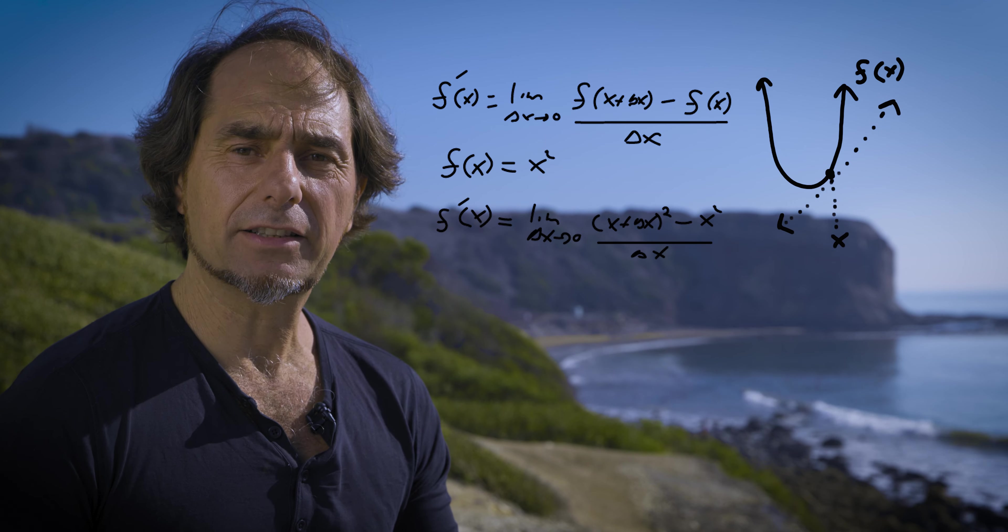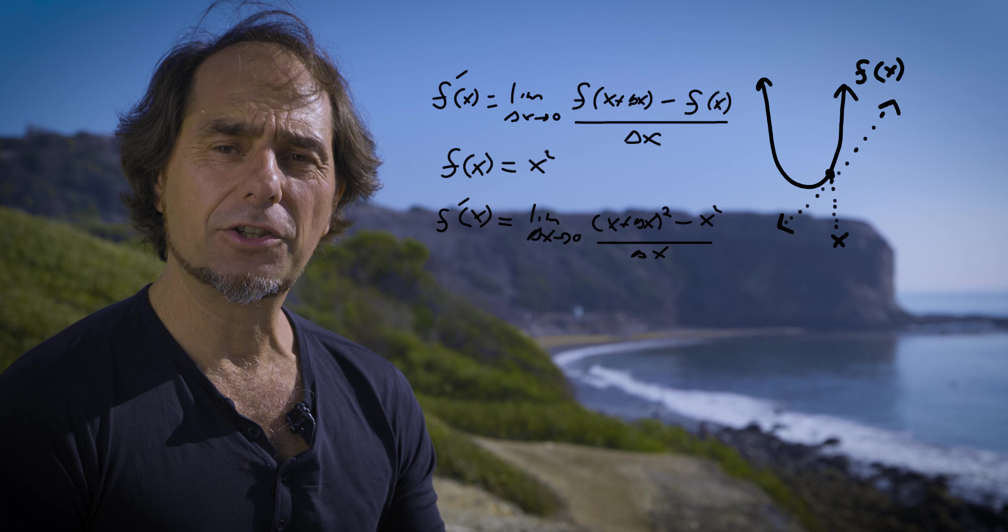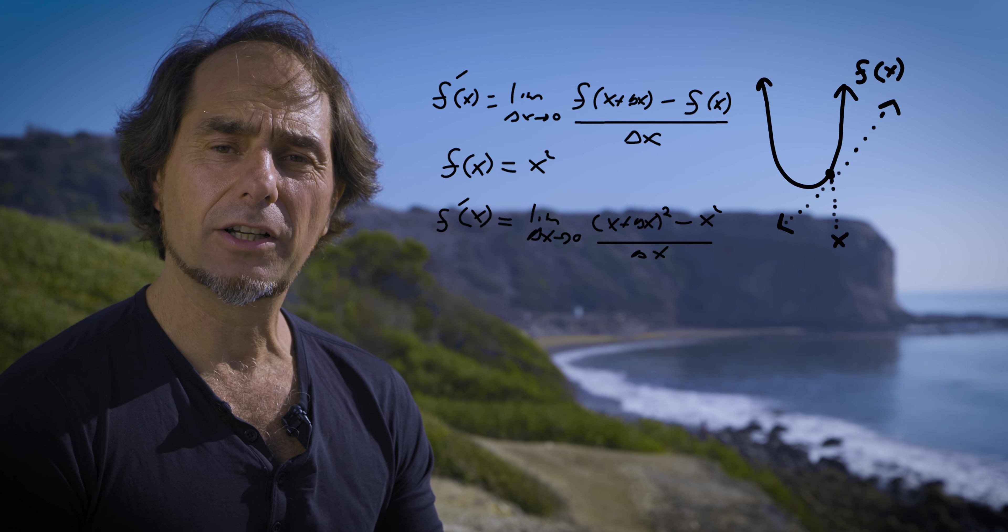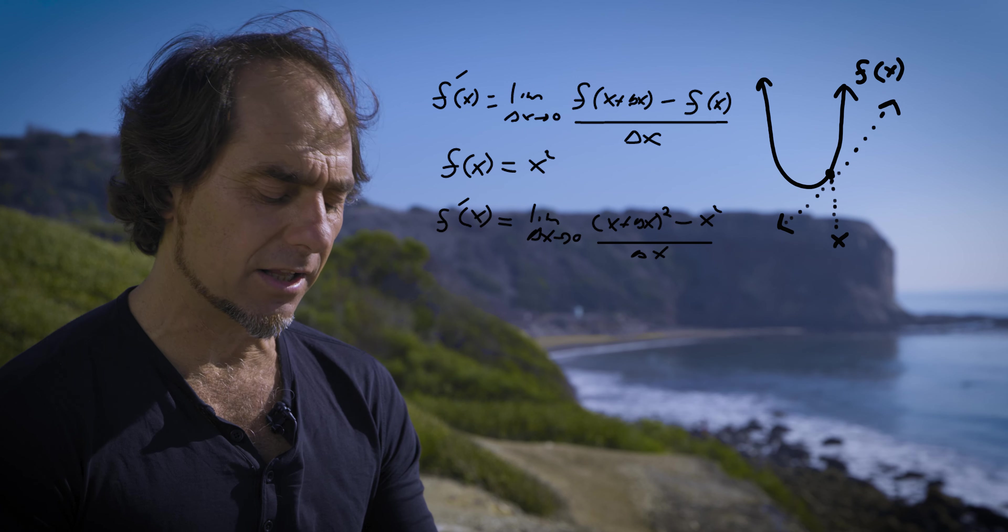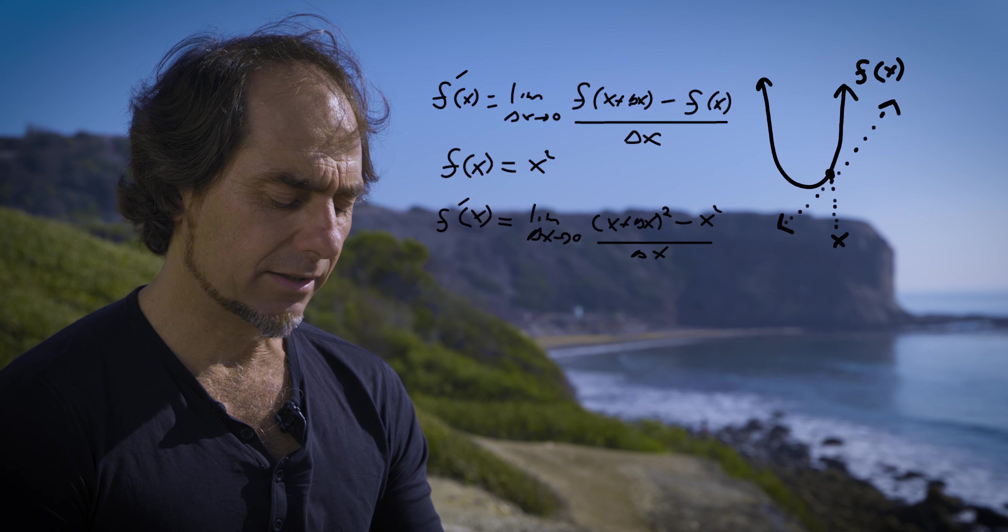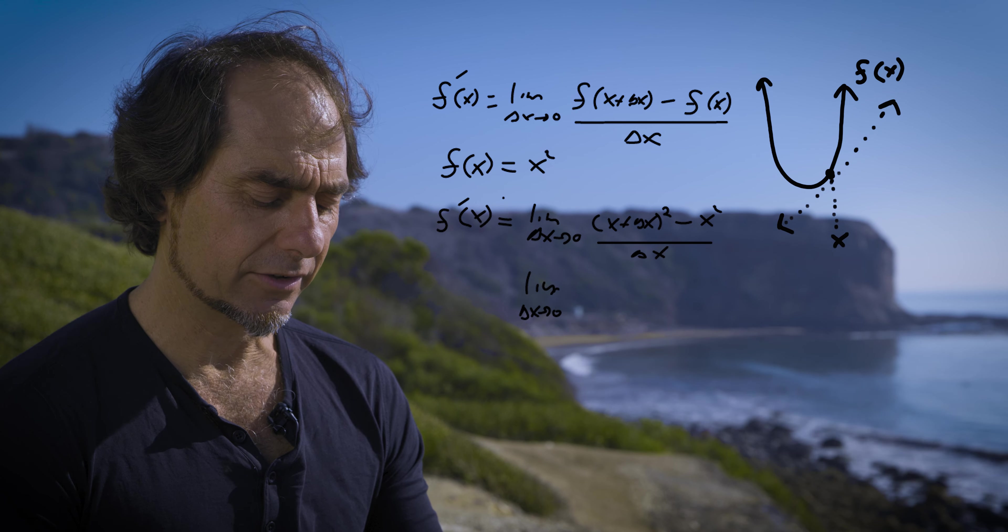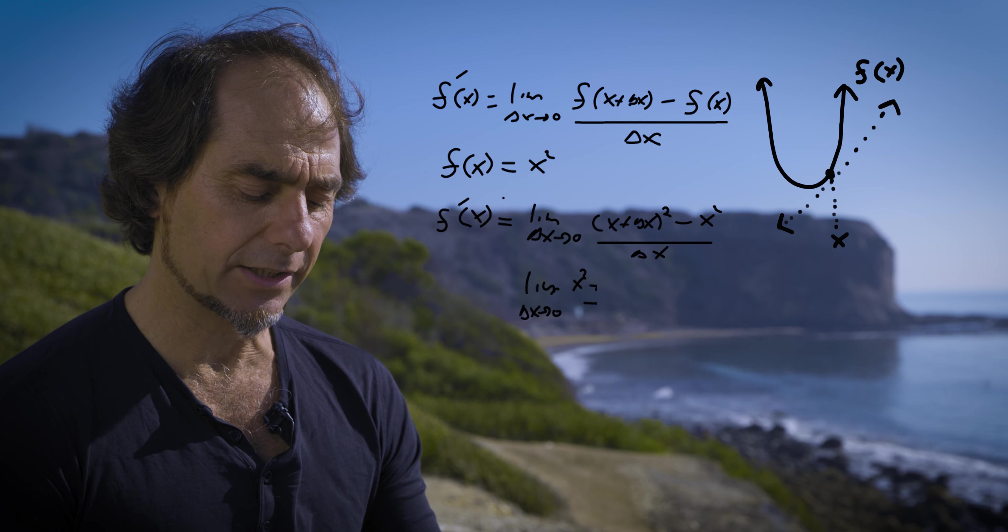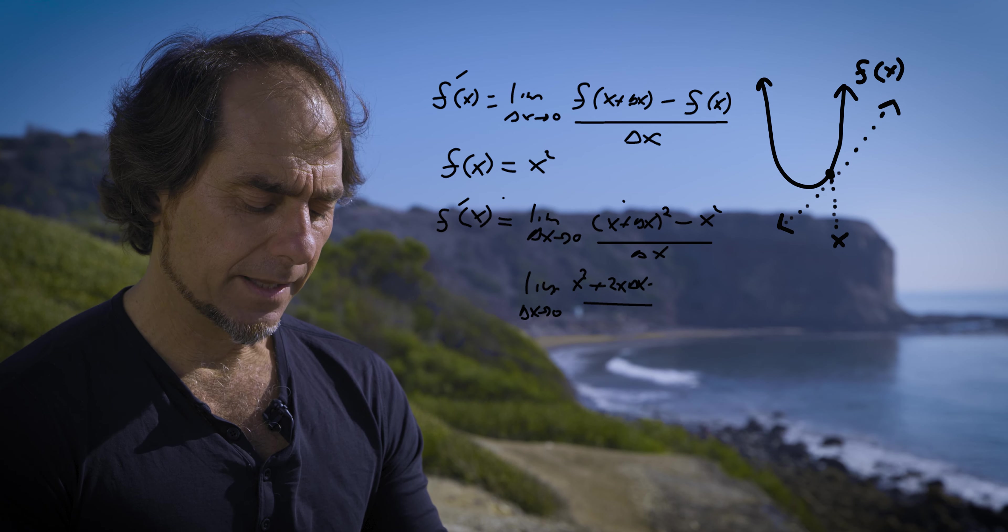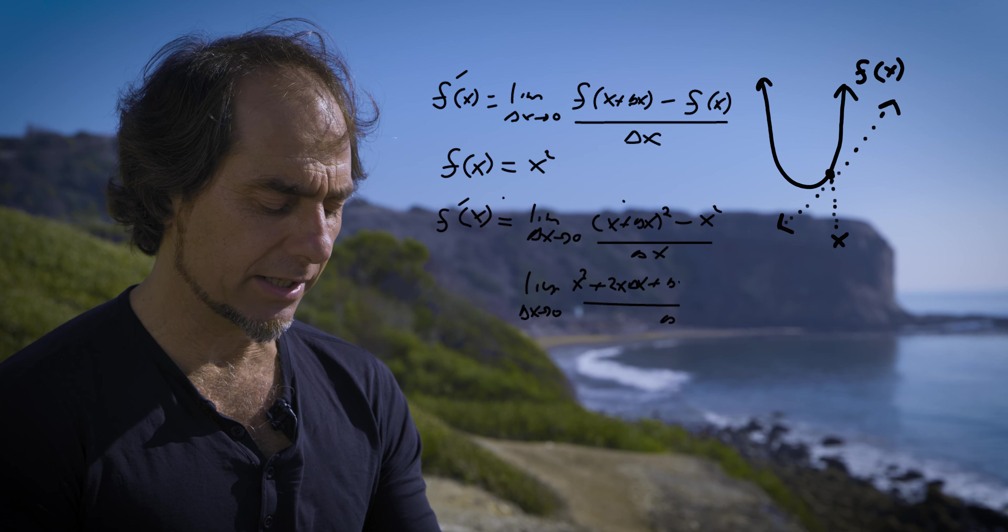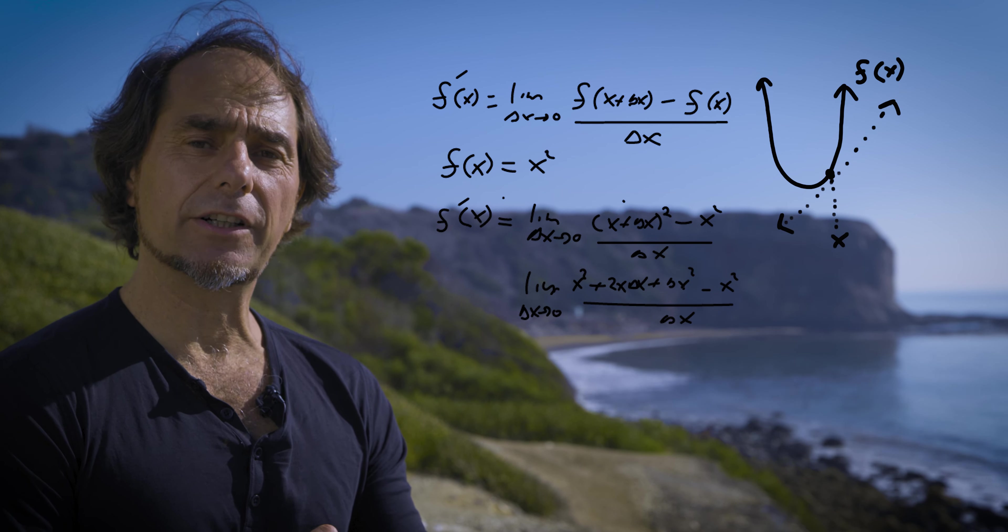At this point, technically your calculus is almost done. Now we have to unpack this stuff using some basic algebra principles on FOIL. So if we FOIL out this first term, we end up getting the following: x squared plus 2x delta x plus delta x quantity squared minus x squared all over delta x. Please do not forget to bring down your limit as delta x goes to zero.